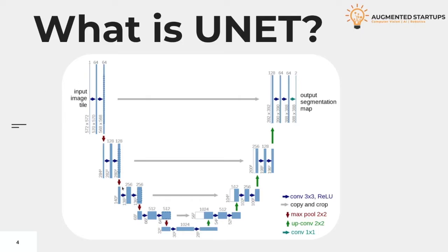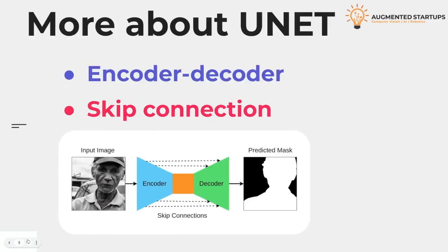Here in this figure, we have a block diagram of the UNET, which is a U-shaped encoder-decoder architecture. On the left side of the diagram, we have four encoder blocks, and on the right side of the diagram, we have four decoder blocks. One of the main features of the UNET is the use of this encoder-decoder structure.